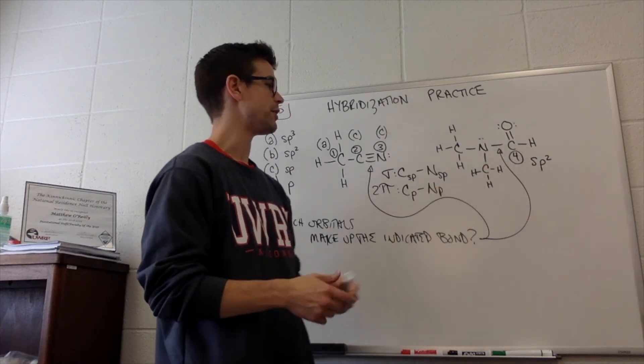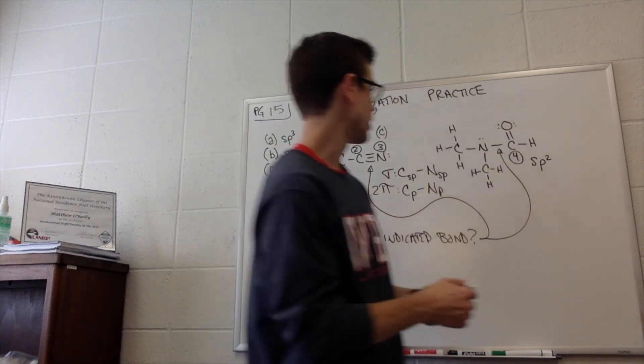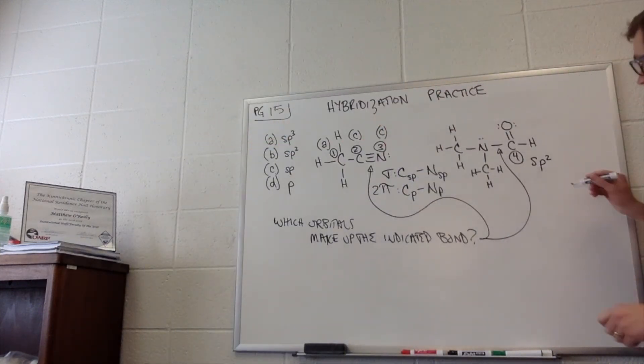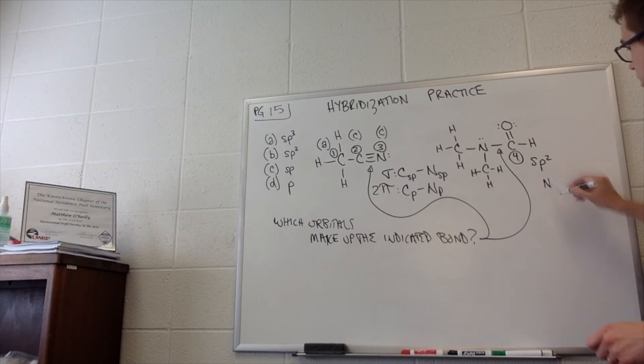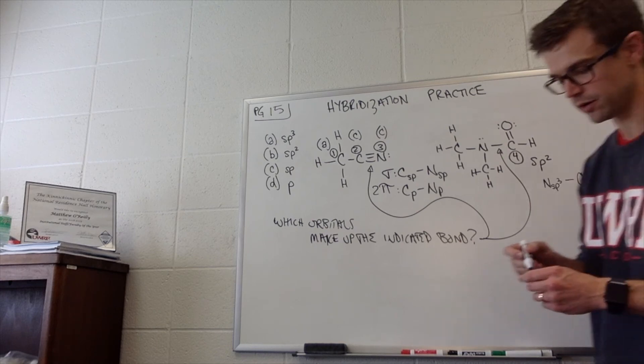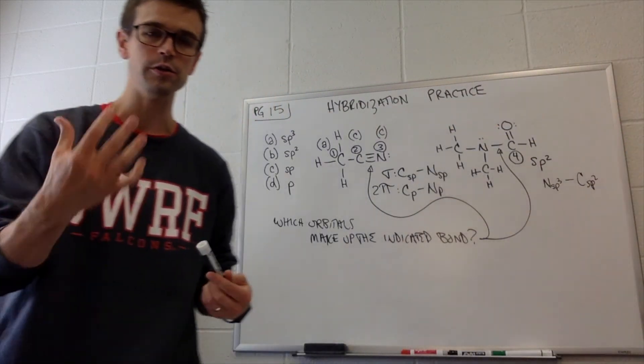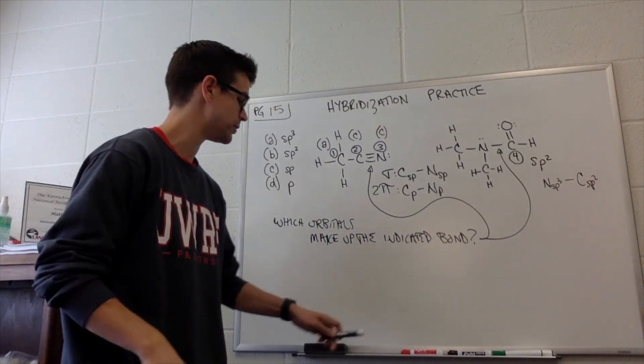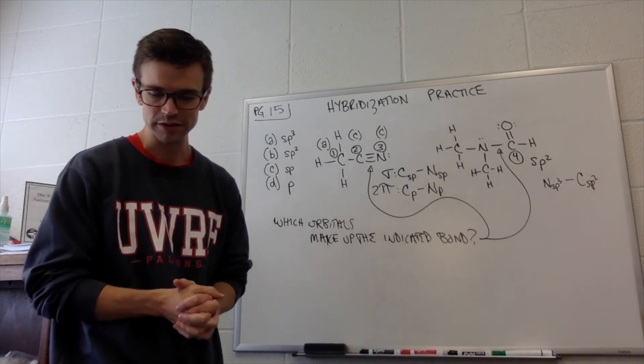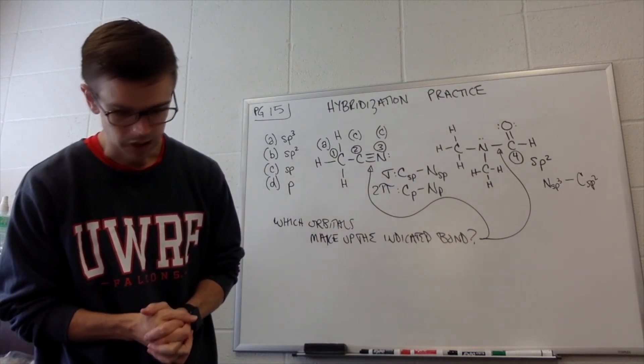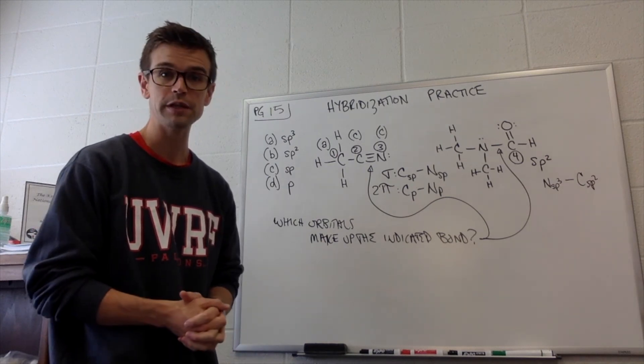What about the carbon-nitrogen bond here? The carbon-nitrogen bond here has a nitrogen that is sp3 hybridized. So it's a nitrogen sp3 bond to a carbon that is sp2 hybridized. So it's N-sp3 to C-sp2. So hopefully that was pretty easy. And that takes us through page 15.